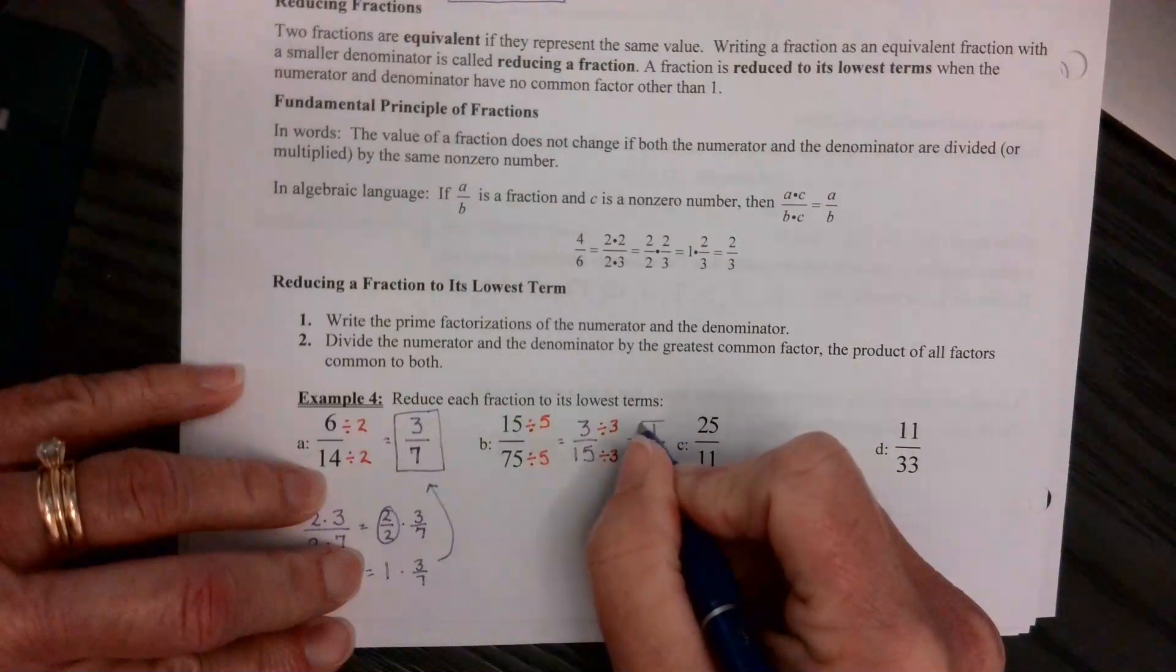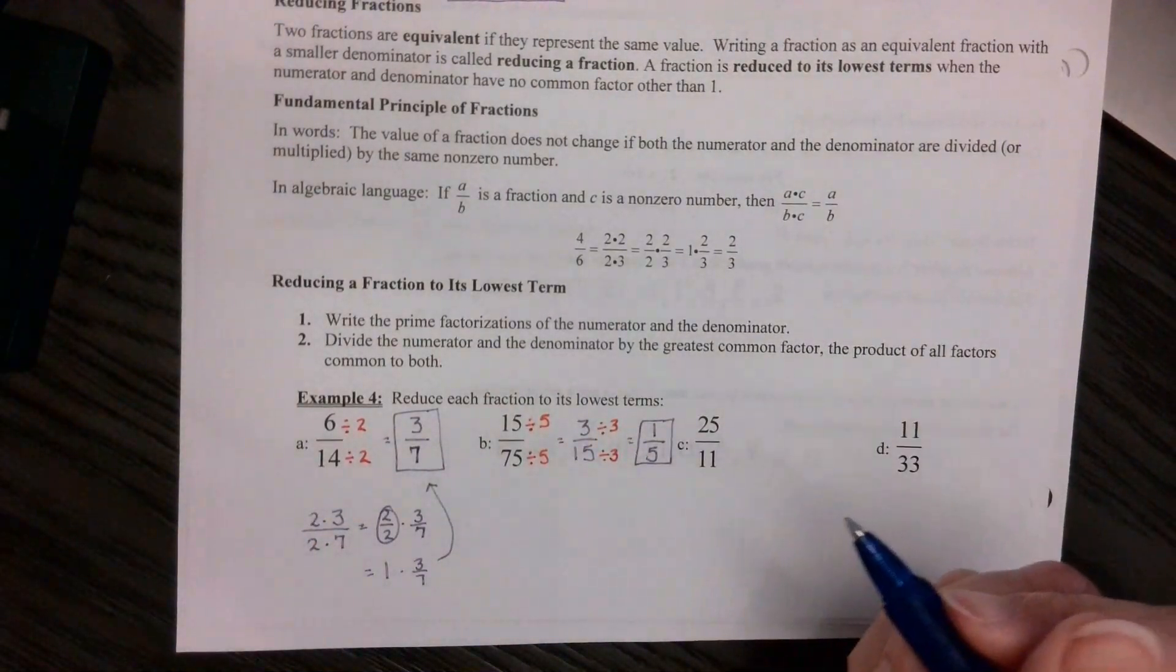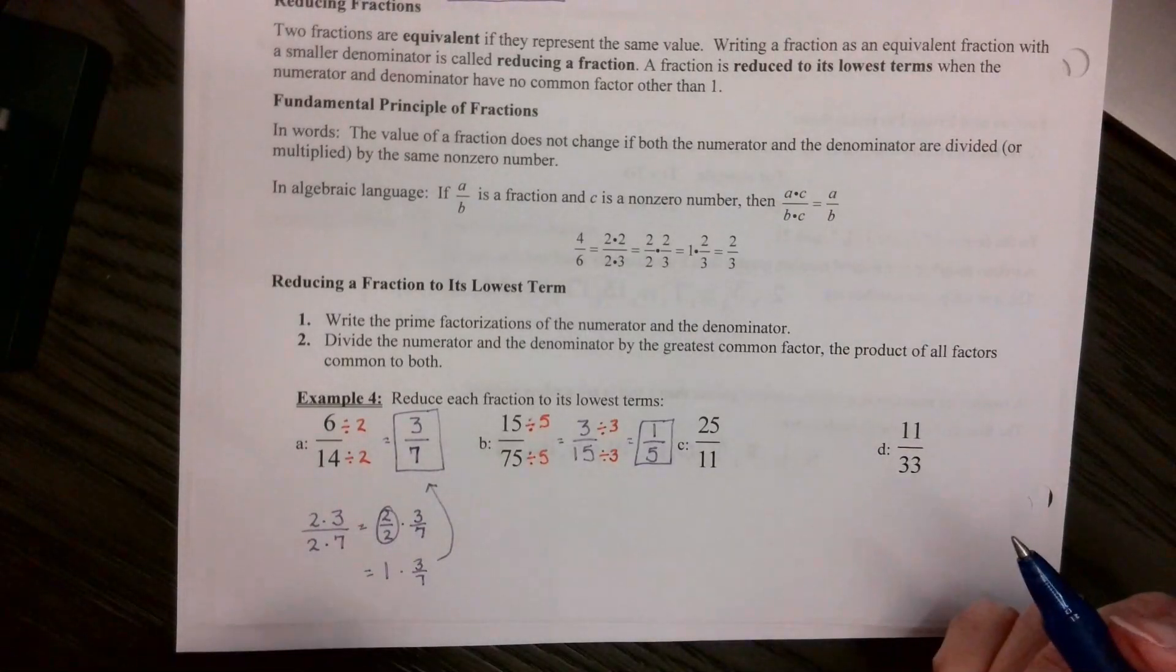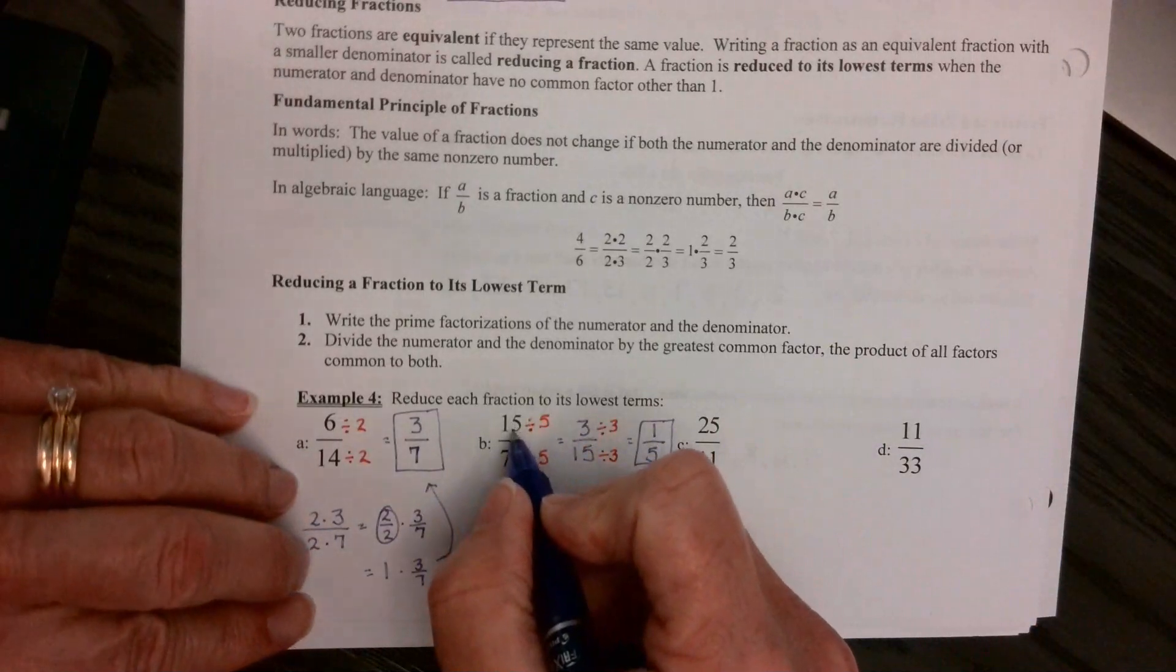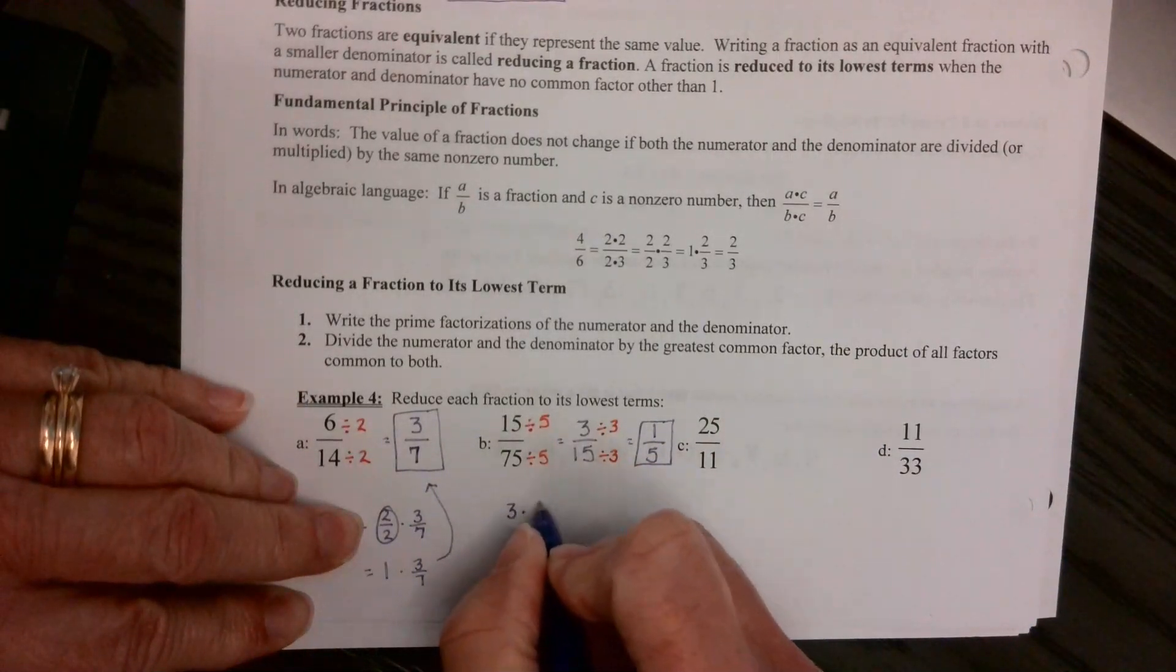So really, I could have divided the top and the bottom by 15, and then I would have gone straight to 1/5. But if we were going to do the prime factorization for these, like the factor tree, if I did the factor tree for 15, I'd end up with 3 times 5.